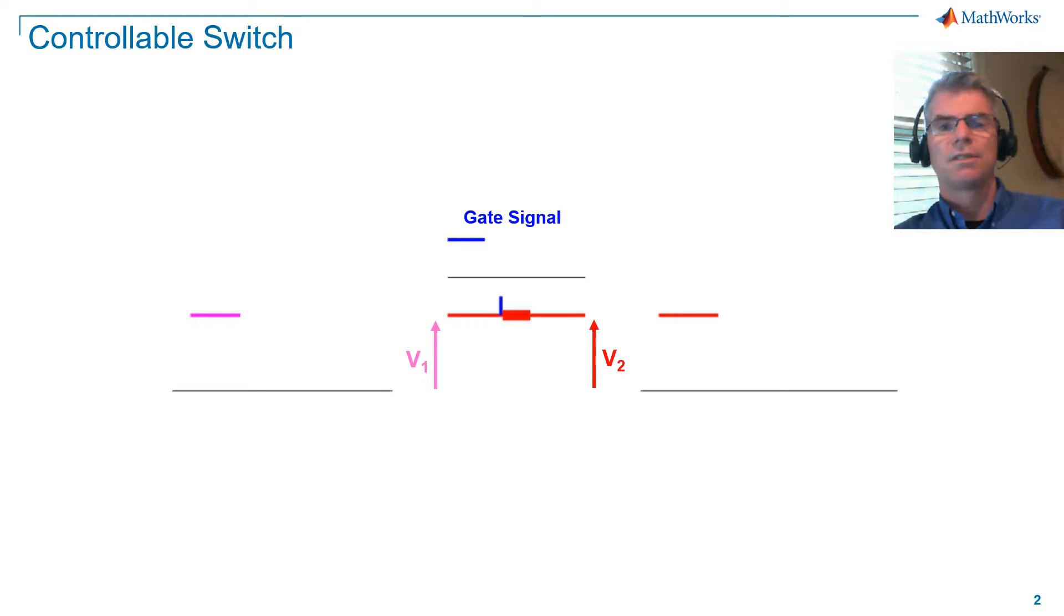The process of converting a DC waveform, which has only one polarity, to an AC waveform, which has both positive and negative polarity, is known as inversion.